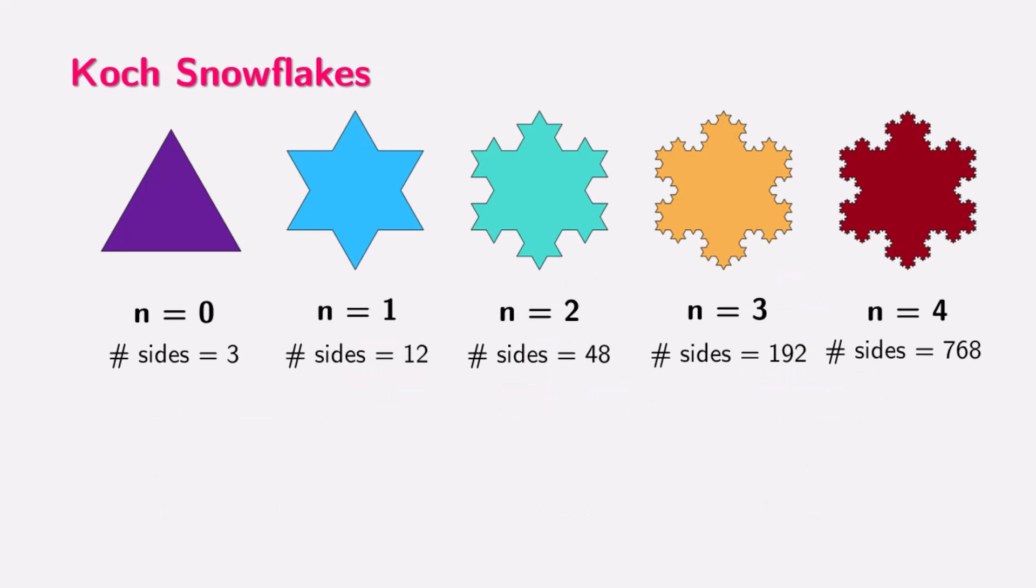Let's take a look at the Koch snowflake, a fascinating example of a fractal in mathematics. The Koch snowflake begins with a simple equilateral triangle, which is our starting shape for iteration n equals zero. This triangle has three sides. At each subsequent step, or iteration, a new smaller triangle is added to the middle of every existing side. For example, in iteration n equals one, each of the three sides of the original triangle is divided into three equal parts, and an equilateral triangle is added in the middle of each side. This step gives us a shape with 12 sides.